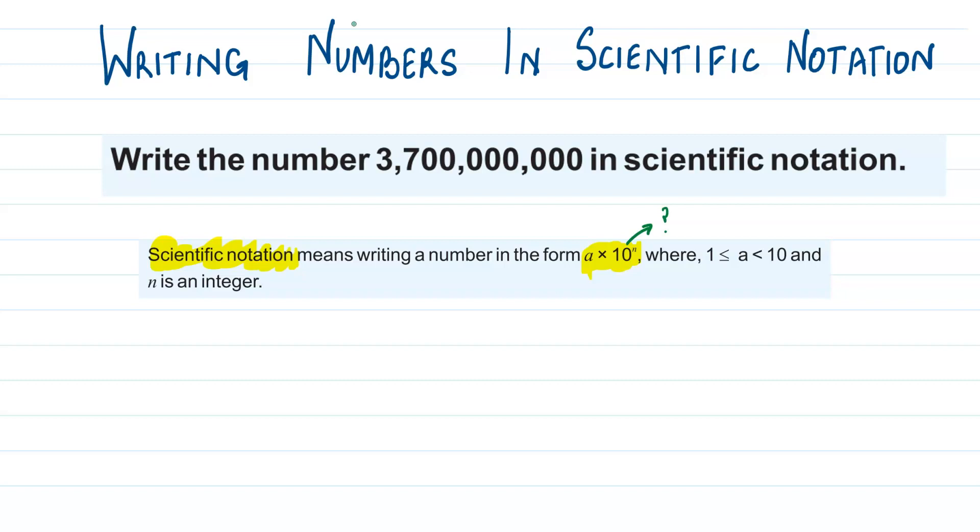So we have to write it in this form, but there is one condition: a has to be greater than or equal to 1, but less than 10. So it has to lie between 1 and 10, but it can be 1.